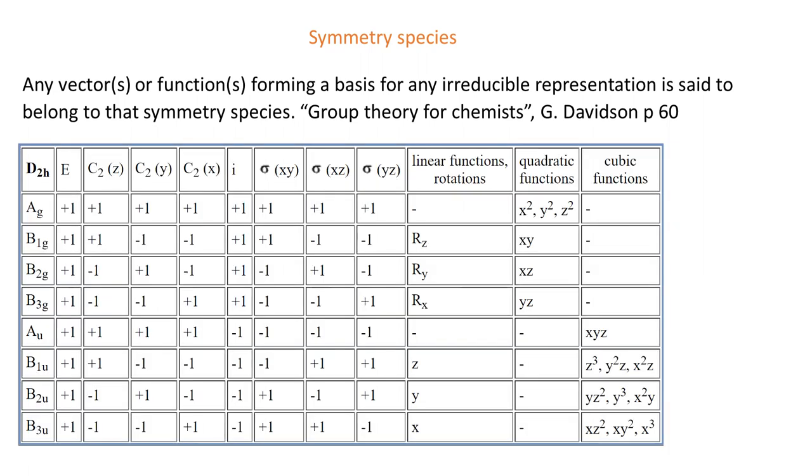Any vectors or functions forming a basis for any irreducible representation is said to belong to that symmetry species. So for D2H group, for instance, Rz and Dxy belong to the same symmetry species. So that's all I have for you. Thank you for watching. Bye!